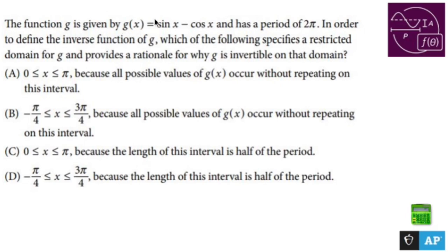The function g is given by g of x equals sine x minus cos x and has a period of 2π. I don't know why it gives you that information because it's a calculator section. I'm going to end up showing you a graph to this anyway.